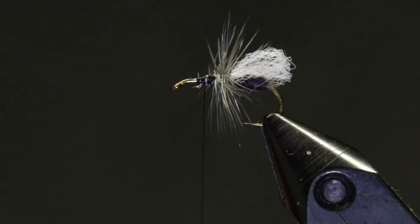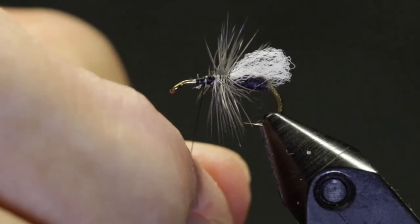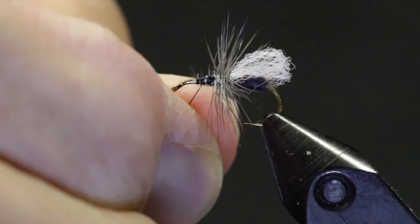When the hackle is clipped from the bottom, the fly sits lower in the surface film, making an ideal presentation for a slow-moving reverse stream, where sipping rises are more normal.